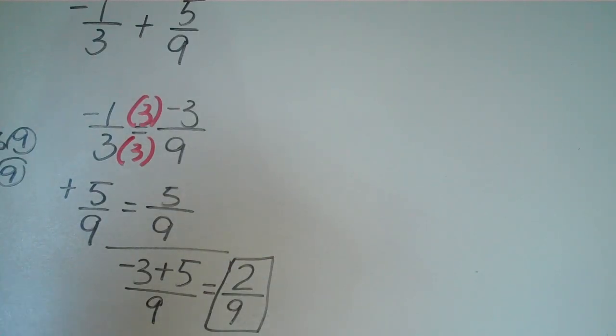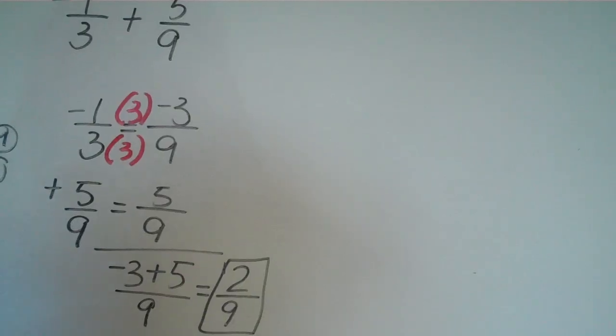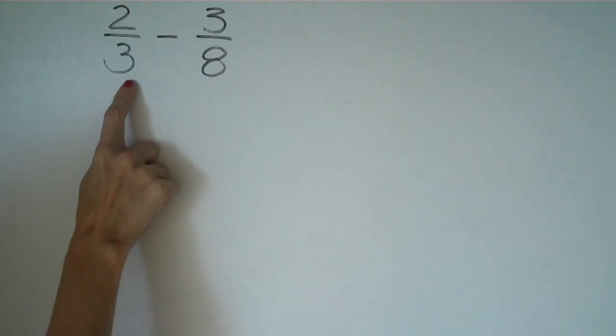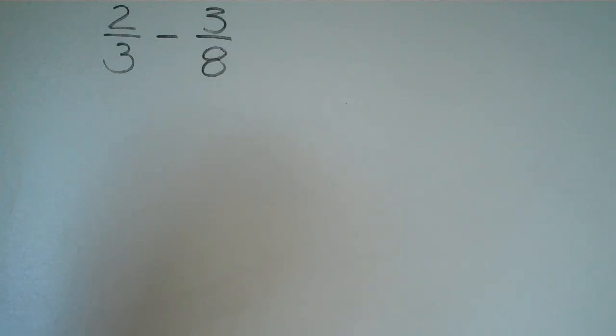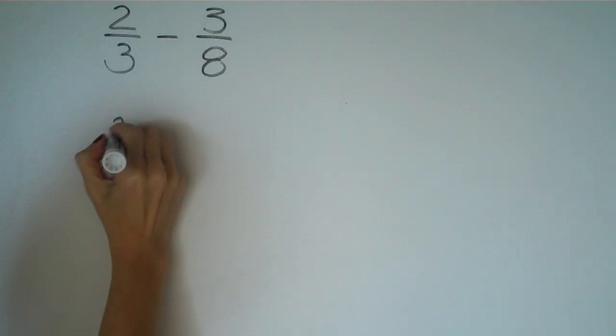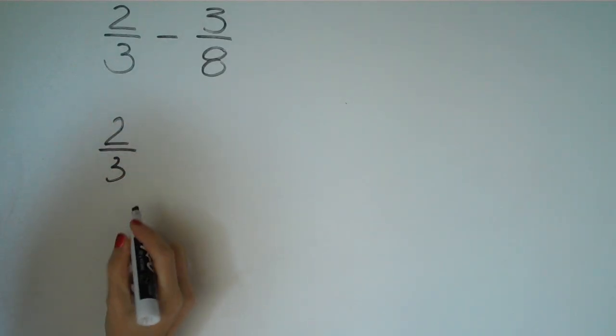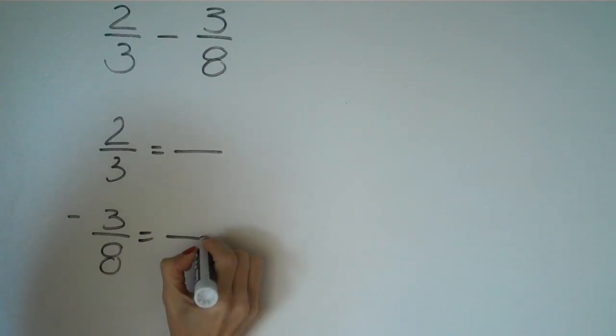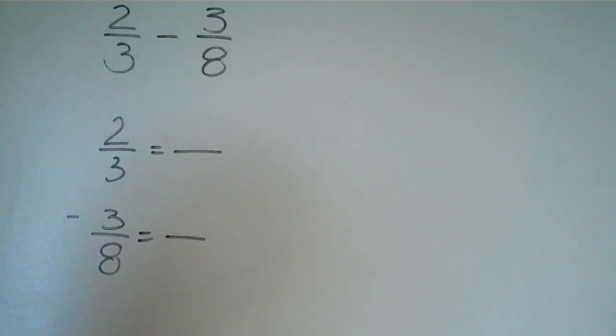So pretty straightforward, not too complicated. I'm going to show you another example. And we'll practice it one more time. 2 thirds minus 3 eighths. So let's say we're going to rewrite this vertically again. Minus 3 over 8. I'm going to set up our equivalent fractions because we see right away they're two different denominators. So we have to make them the same.